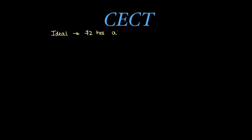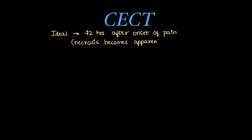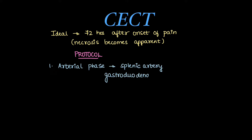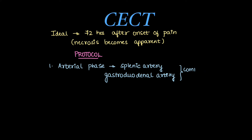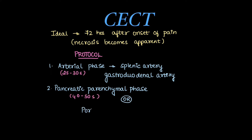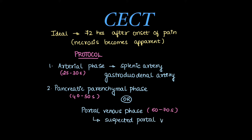Contrast-enhanced CT is the most important imaging modality, ideally done 72 hours after onset of pain because necrosis is well visualized after 72 hours. The protocol includes arterial phase imaging to visualize splenic artery or gastroduodenal artery complications like pseudoaneurysm formation. The pancreatic parenchymal phase at 45 to 50 seconds shows homogeneous enhancement of pancreatic parenchyma. Alternatively, portal venous phase can be done to visualize portal vein thrombosis.